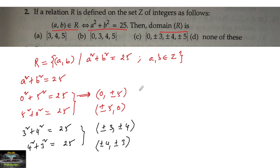These are the different possibilities in the relation. Since the question asks about the domain, the domain of relation R is the set of first elements: {a | (a,b) ∈ R}.